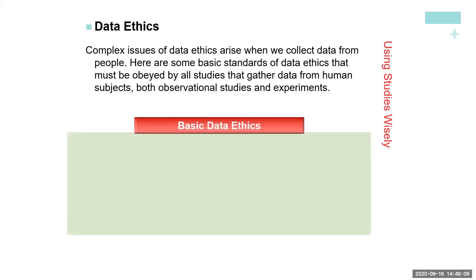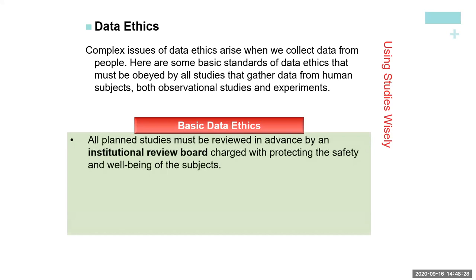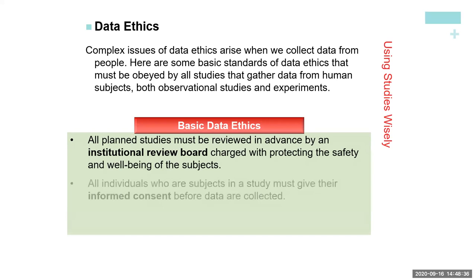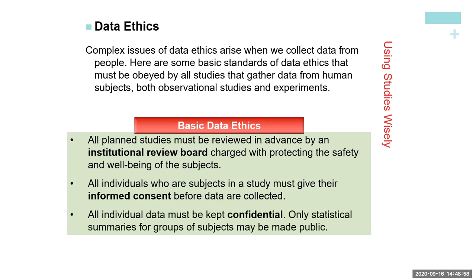Complex issues of data ethics arise when we collect data from people. Here are basic standards of data ethics that must be obeyed by all studies gathering data from human subjects, both observational studies and experiments. All planned studies must be reviewed in advance by an institutional review board charged with protecting the safety and well-being of subjects. All individuals must give their informed consent before data is collected — you always have to ask people permission before you collect their data, otherwise it's illegal. And all individual data must be kept confidential — you're only using the data points and should never state who they are actually from.